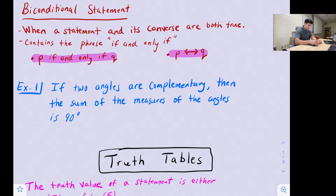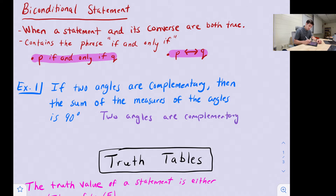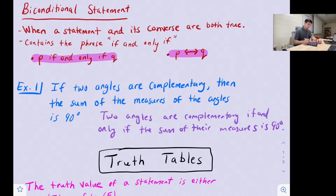Let's look at an example. It says: if two angles are complementary, then the sum of their measures is 90 degrees. If we want to write this as a biconditional statement, we could say: two angles are complementary if and only if the sum of their measures is 90 degrees. That 'if and only if' is our designation for a biconditional statement.